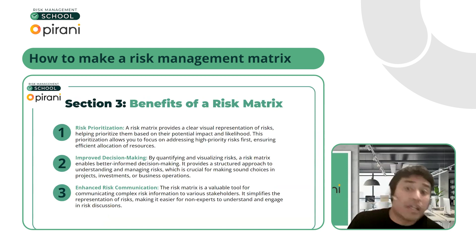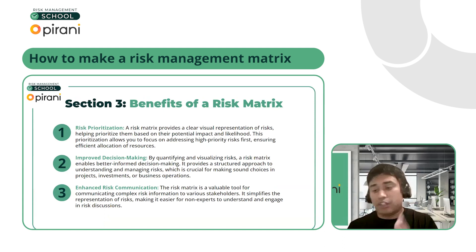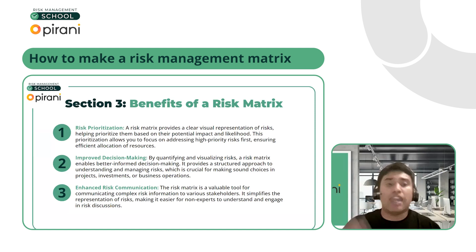What are some of the benefits of a risk matrix? There are a lot, but the three I really like to focus on: first, it helps with the prioritization of risks, so you stay organized. There are risks that are very likely to happen and those that are very unlikely, with varying degrees of impact. If you always have the most unlikely things at the top of your mind, you're going to forget the ones that are most likely to happen.